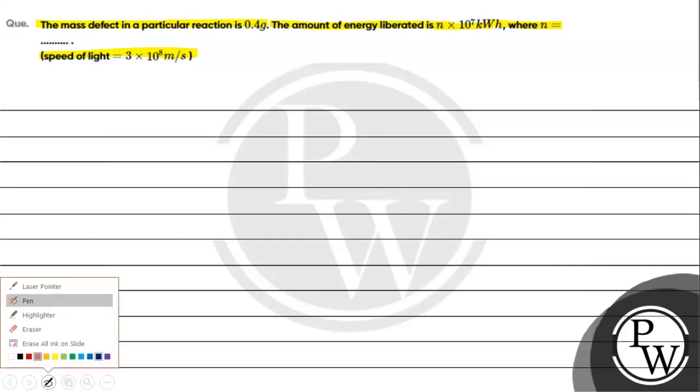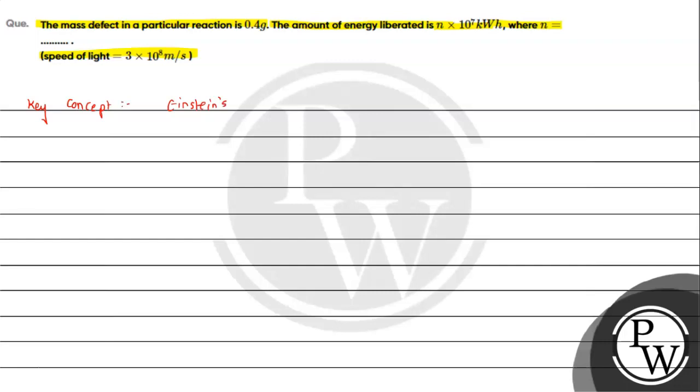So this question, the key concept we need to understand is the concept of energy mass equivalence that is given by Einstein equation. Einstein's equation of energy mass relation, that is E equals to delta mc square.